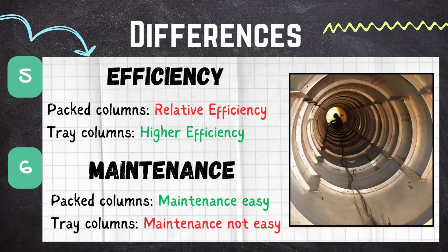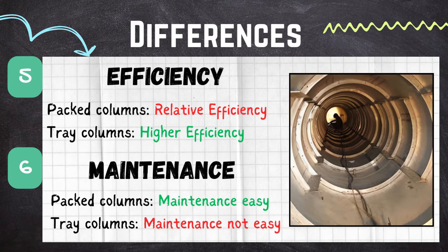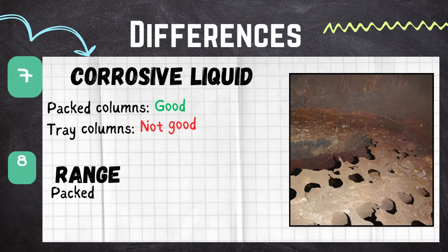The next difference is about maintenance. In the packed column, maintenance is easier compared to tray columns because the packing material is randomly placed and can be easily removed, cleaned, and reused. In the case of tray columns, maintenance is not as easy because the trays or plates are fixed and not easily accessible.